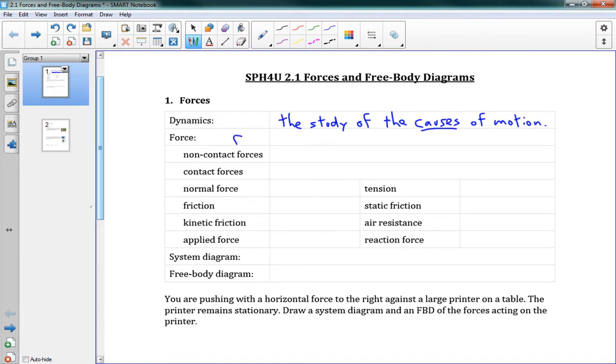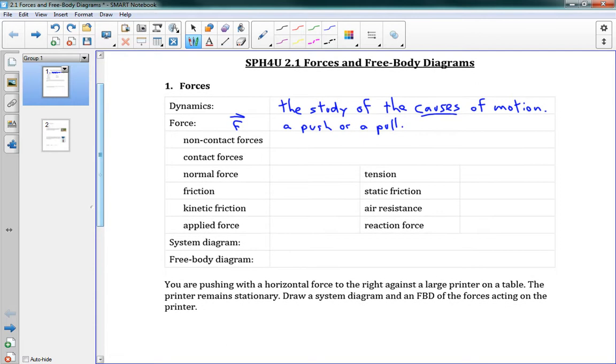A force, the symbol for this is F, and it's a vector so we can draw an arrow over it. A force is a push or a pull, and any force could be described that way. We have two categories of forces: non-contact forces and contact forces. Non-contact forces, well that's a force between objects that aren't touching.